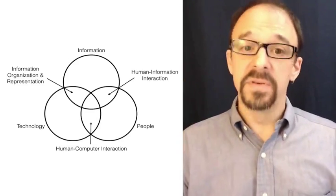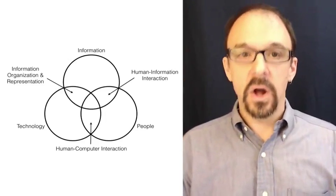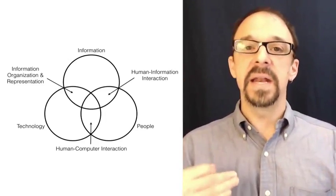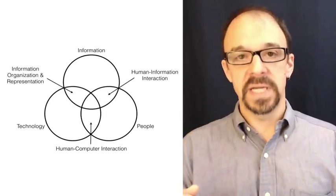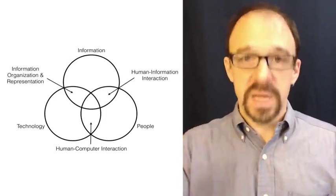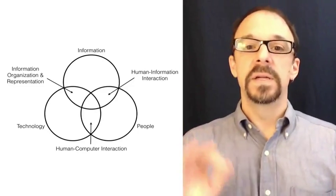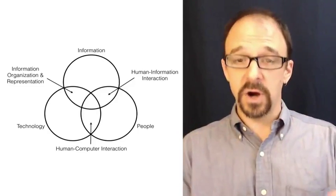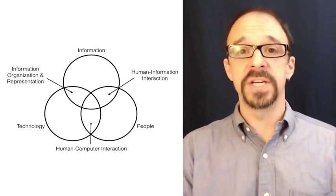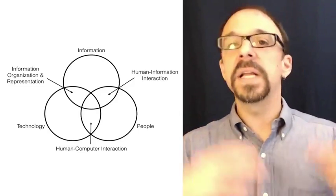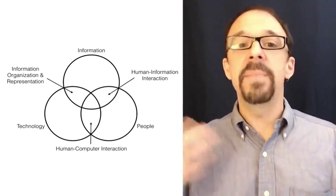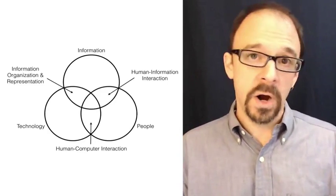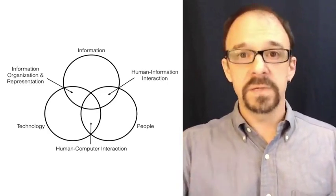The last couple of videos made it clear that, ultimately, my take on it anyway, is that information science is all about people. Despite the fact that this Venn diagram has three parts — people, information, and technology — partly this is my bias that I think people are the most important part of this picture.